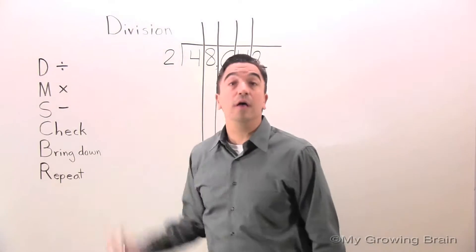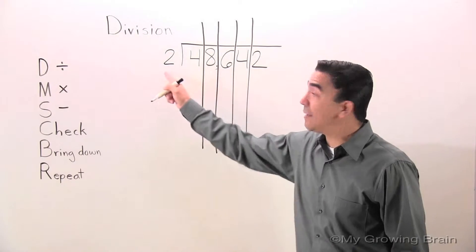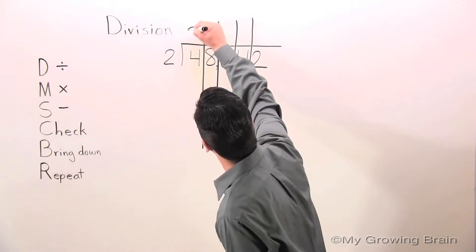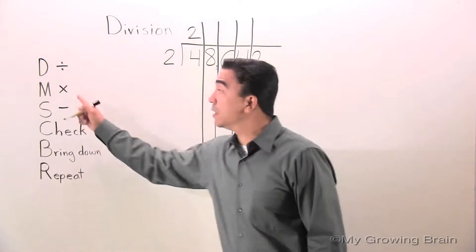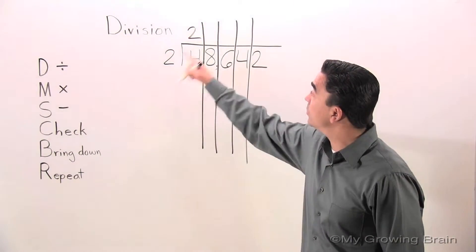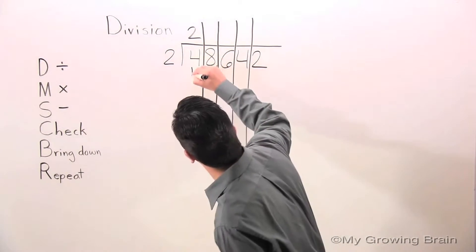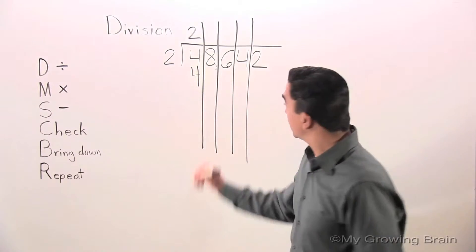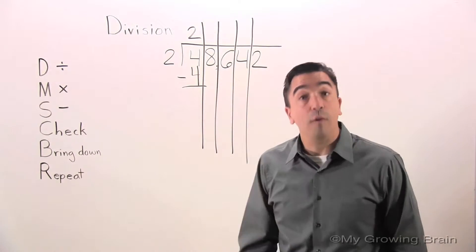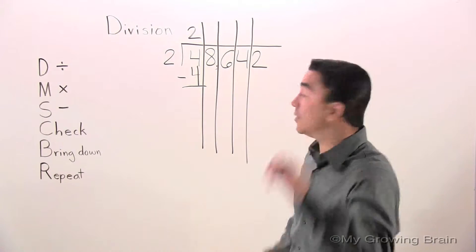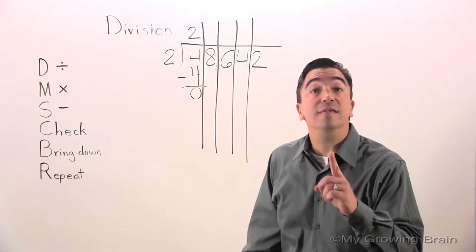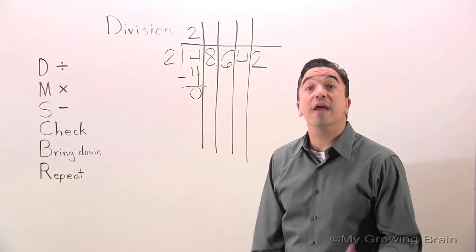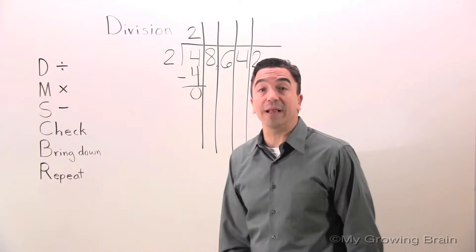First step: divide. 4 divided by 2, or 2 into 4, equals 2. Next step: multiply. 2 times 2 equals 4. Next step: subtract. 4 minus 4 equals 0. Next step: check. 0 is less than 2. Therefore, we need to do the next step, which is bring down.